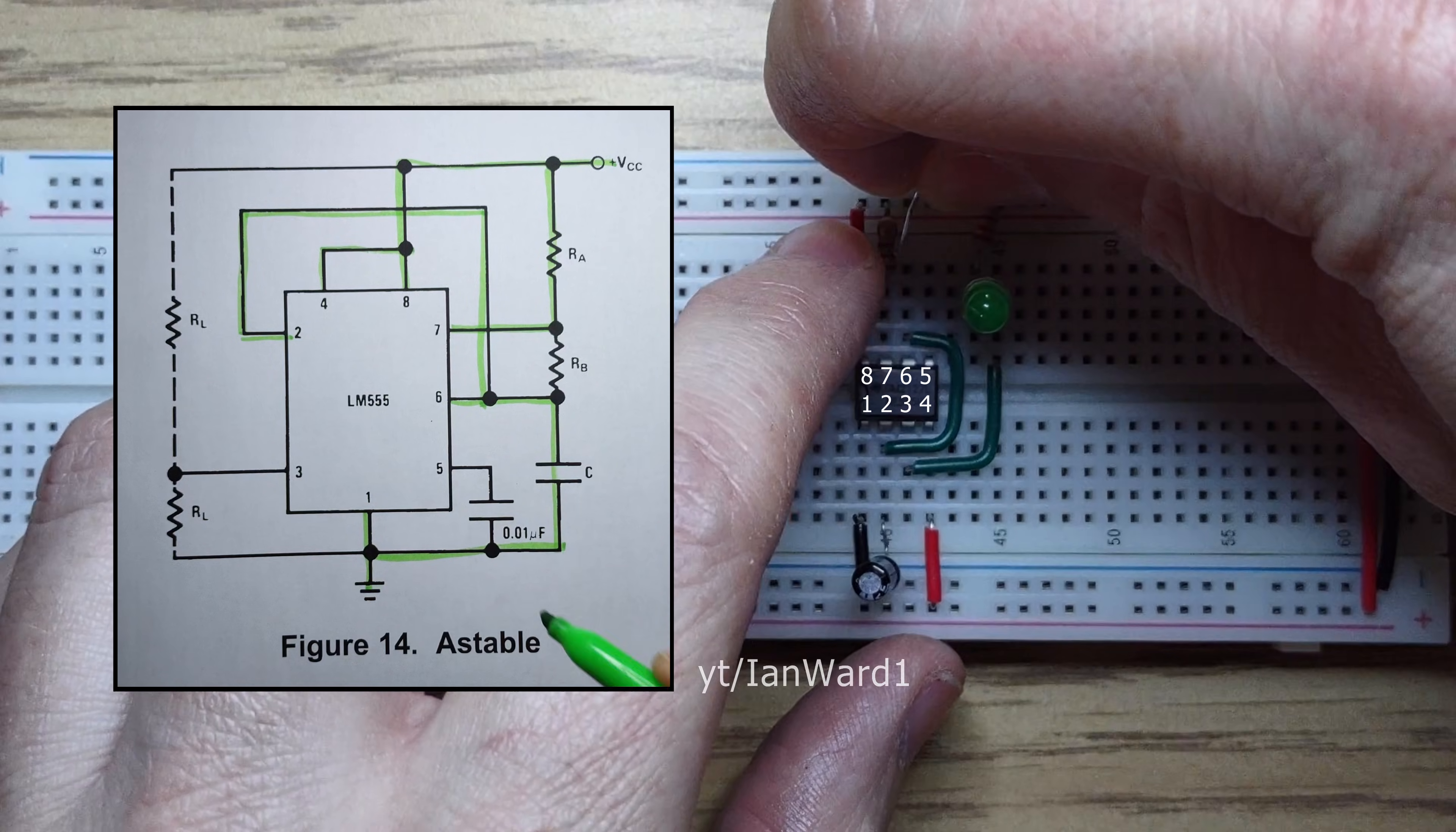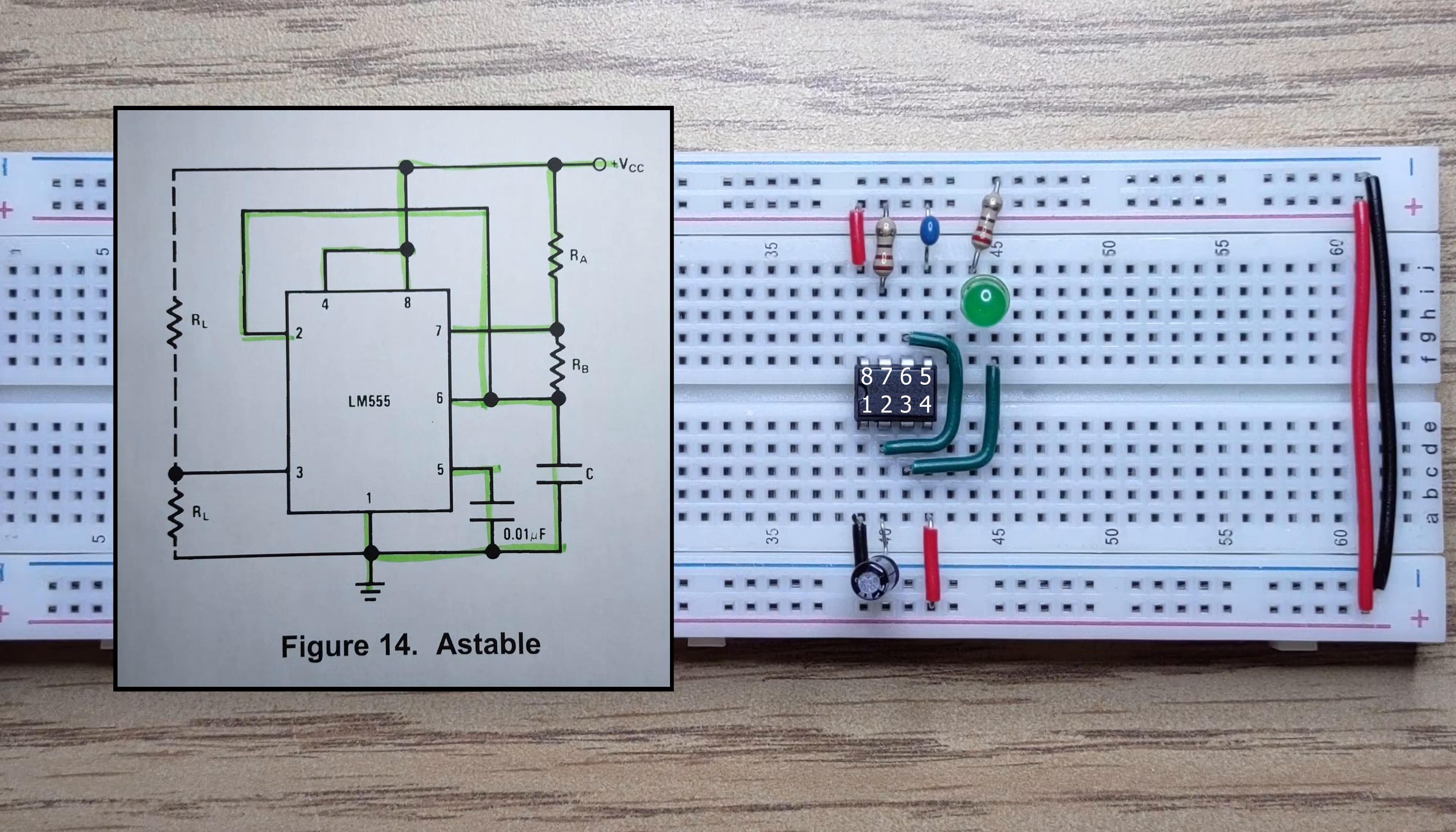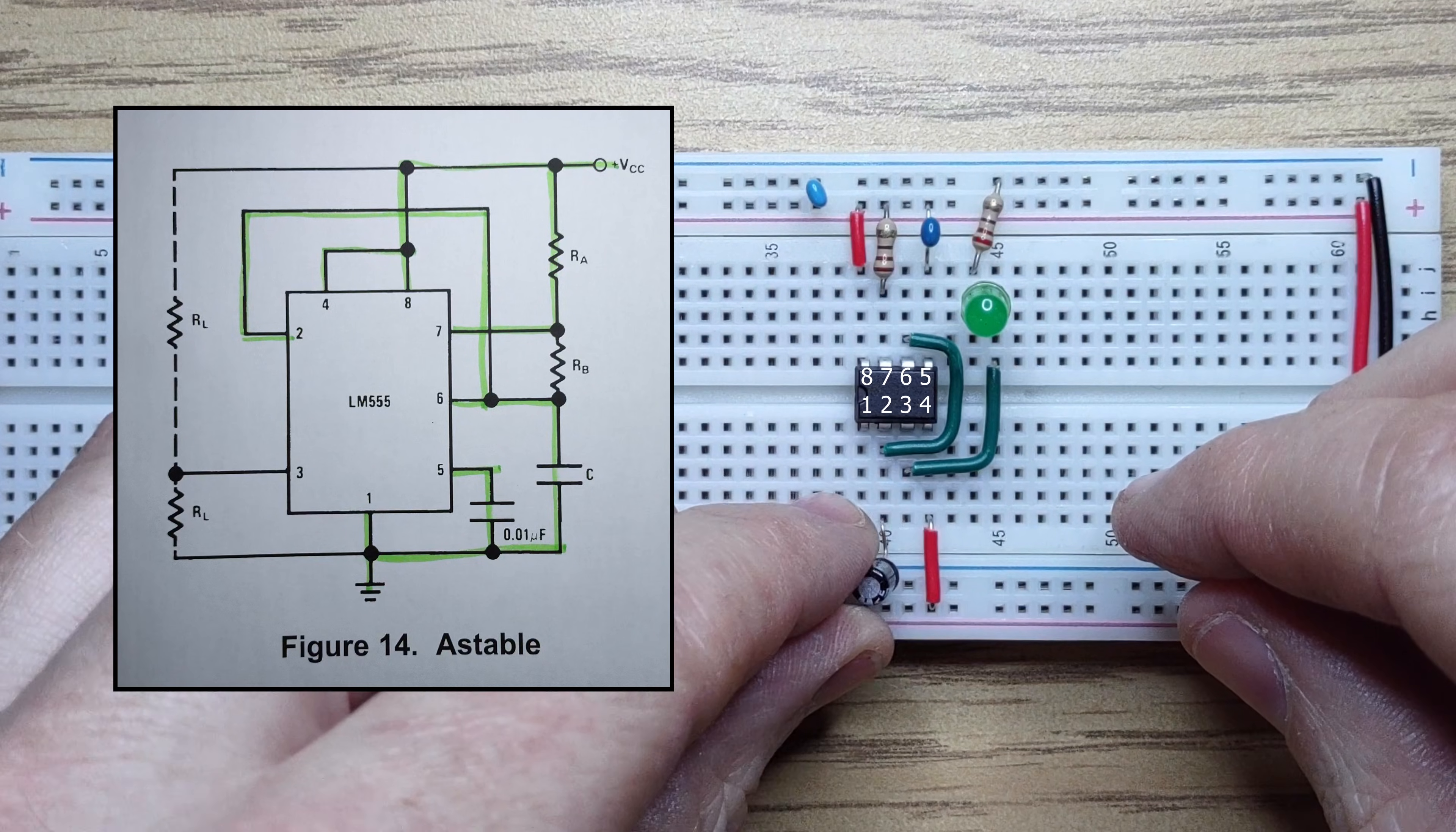We'll connect the recommended decoupling capacitor from pin 5 to ground, and add some decoupling capacitors to our power rails. These capacitors reduce the effects of rapid switching on the 555 timer.